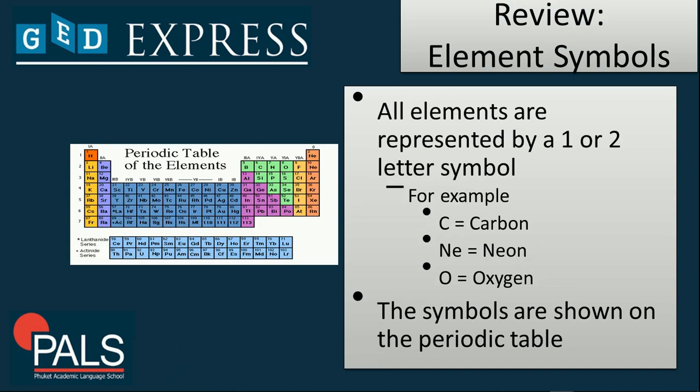Now we have a quick review of the elements' symbols. All elements are represented by a one or two-letter symbol. For example, C is for carbon, Ne is for neon, and O is for oxygen. The symbols are shown in the periodic table, such as the one that you have on your left.